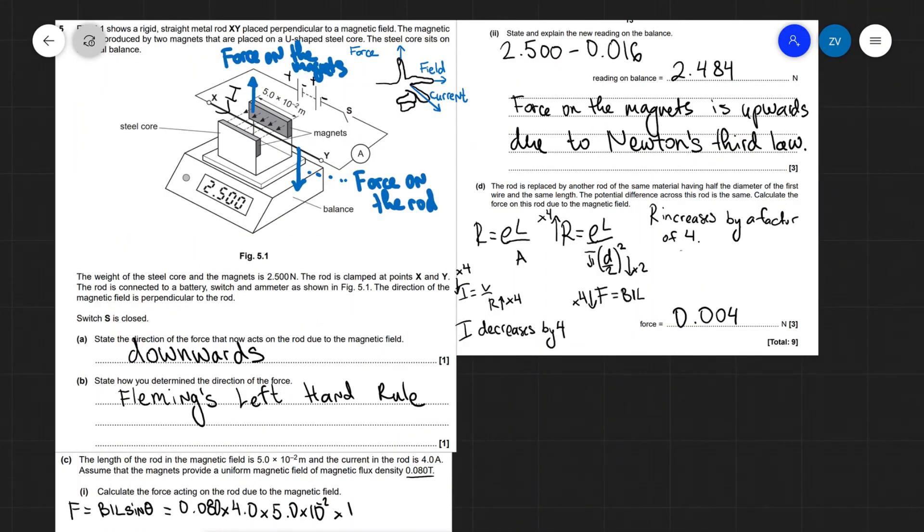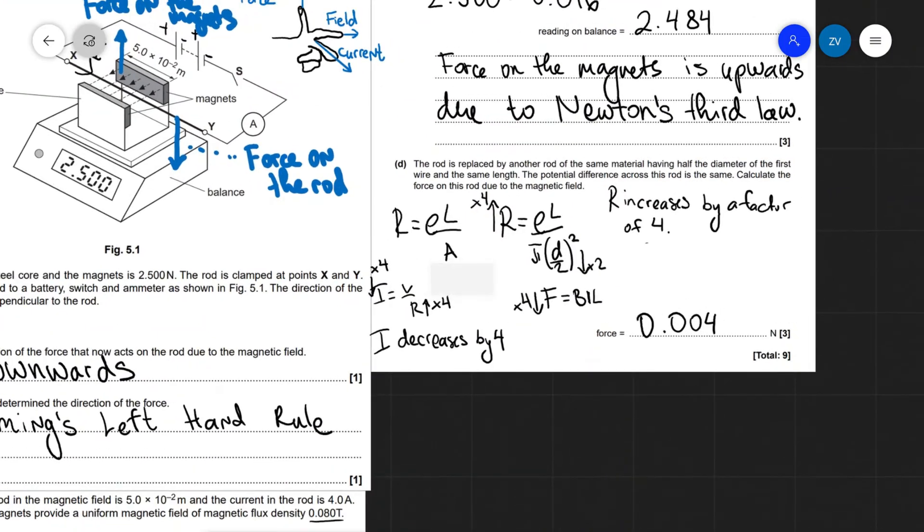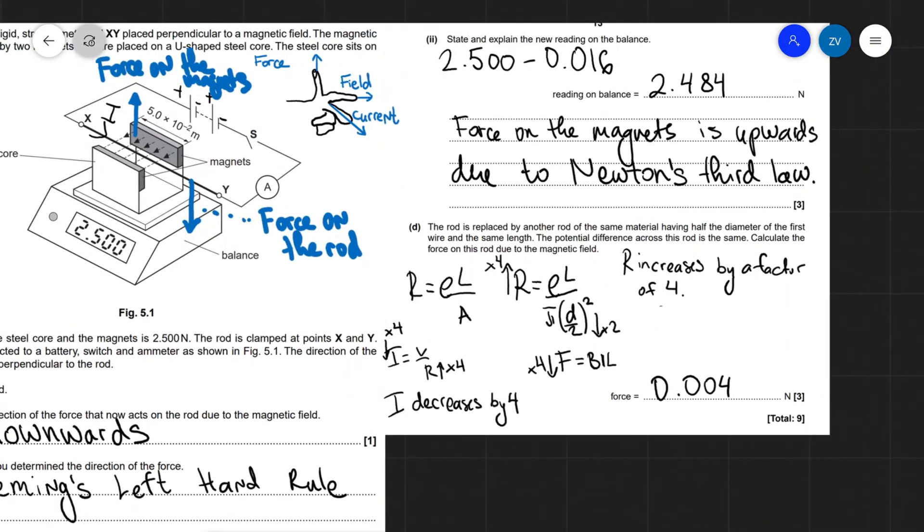Okay guys, now for part D: the rod is replaced by another rod of the same material having half of the diameter of the first wire and the same length. The potential difference across the rod is the same. Calculate the force on this rod due to the magnetic field.